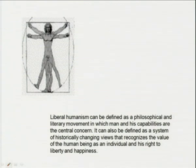Liberal humanism can be defined as a philosophical and literary movement in which man and his capabilities are the central concern. It can also be defined as a system of historically changing views that recognizes the value of the human being as an individual and his right to liberty and happiness. Here, the critic brings the cultural and religious assumptions of his own time to bear upon the literary work — man, being a product of his culture, brings his understanding upon the literary work.